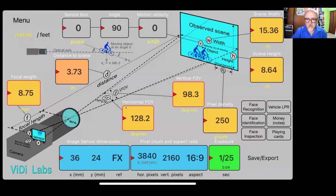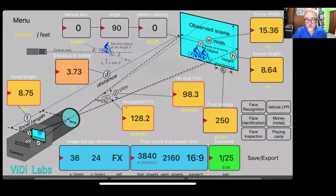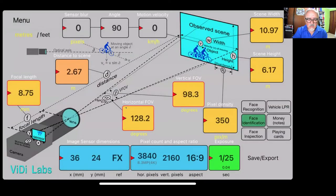So whether you use it manually, or even by double tapping and entering, let's say 350, or by scrolling, either way, you see that the actual distance to scene window came up with a distance of 2.67 meters, right.